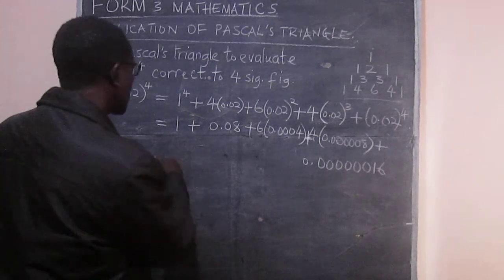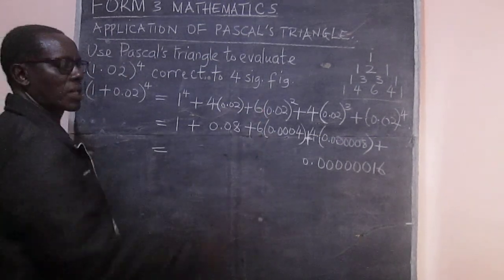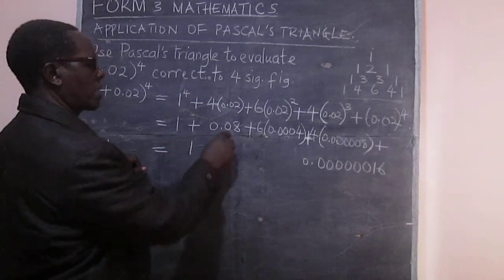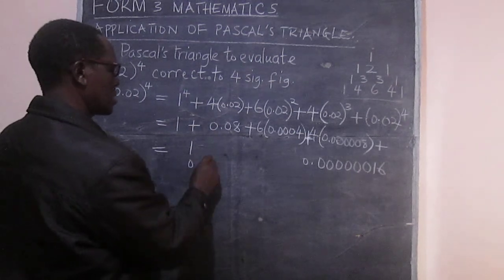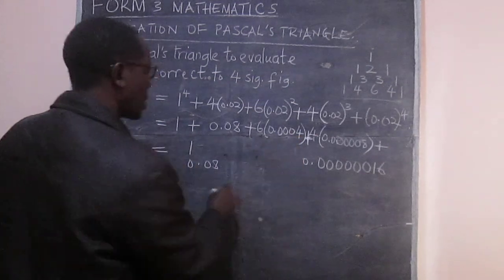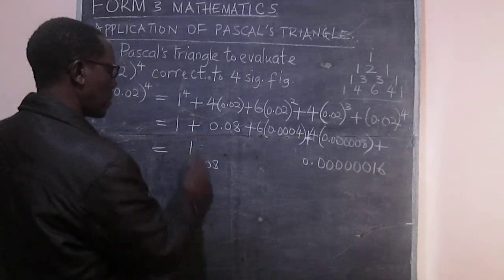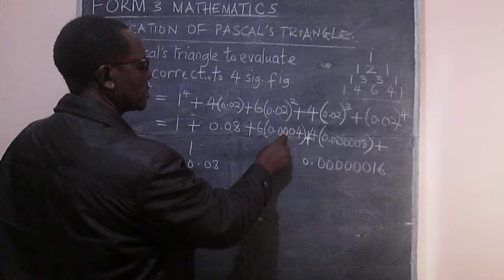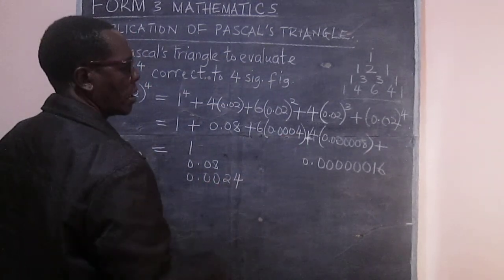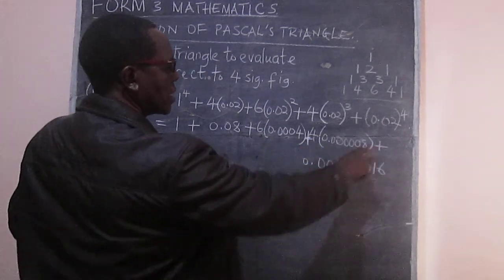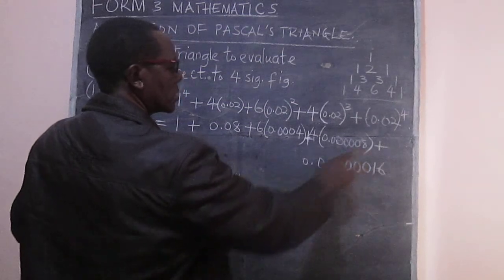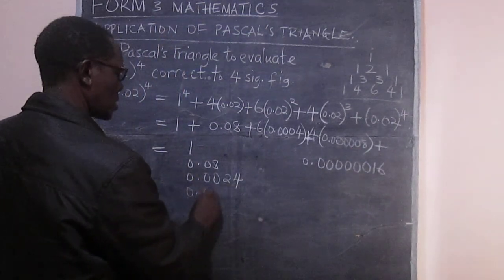So we need now to add this one very carefully. So the very first one here is 1, and then we have 0.08, then this one is 0.0024, and then this one is 0.000032.